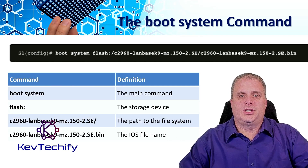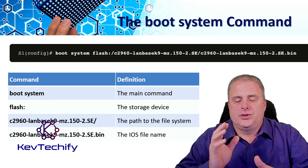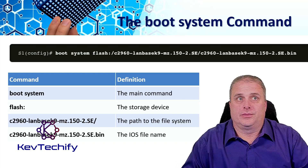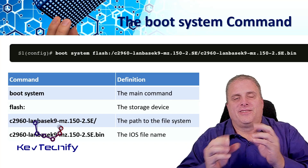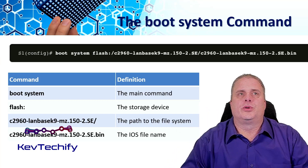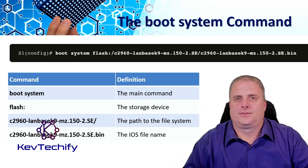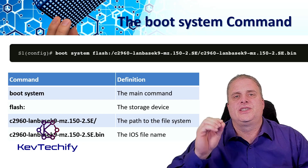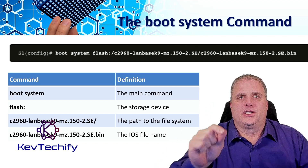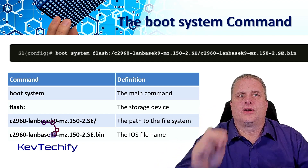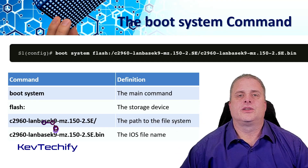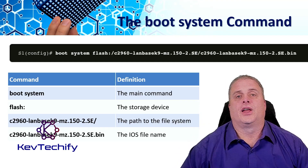The switch tries to automatically boot using the information in the boot environmental variable. If there's no variable set, it loads the first executable it can find. The operating system then initializes the interfaces with the configuration commands found in the startup config file. The startup config file is called config.txt, and that's found in the flash.